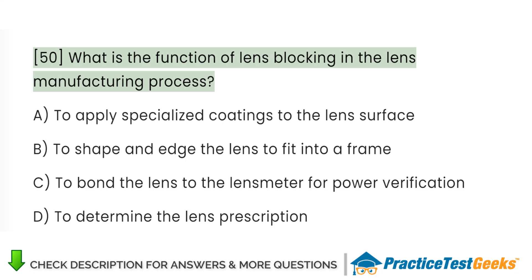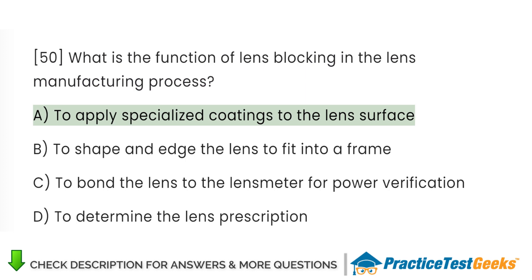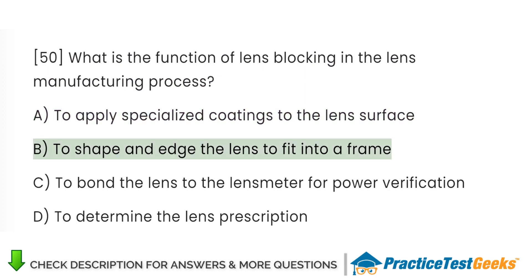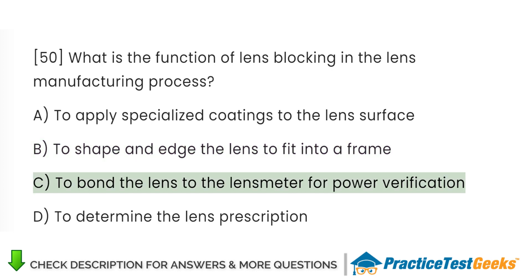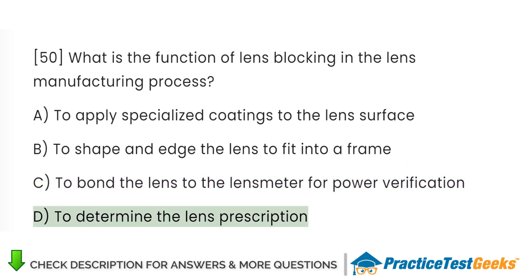What is the function of lens blocking in the lens manufacturing process? A. To apply specialized coatings to the lens surface. B. To shape and edge the lens to fit into a frame. C. To bond the lens to the lens meter for power verification.